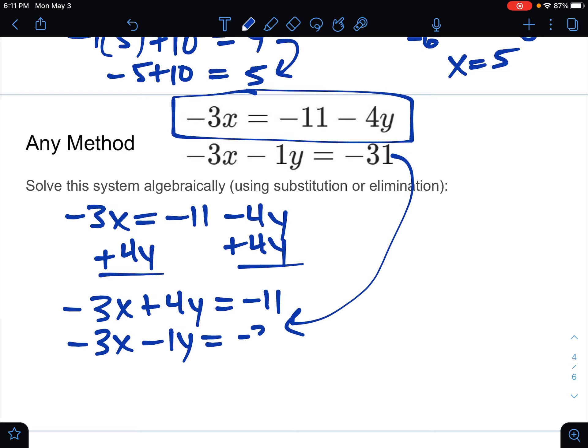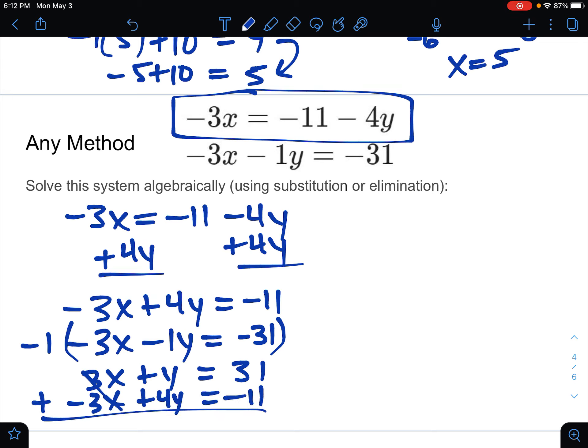Taking the second equation and putting it underneath, I want to get opposites next. So no opposites right away, but I could multiply the whole bottom one by a negative one, and that would produce an opposite. That would be 3x plus y equals 31. And then negative 3x plus 4y is negative 11. And if I add those two, the x's are going to drop out. And we get 5y equals 20.